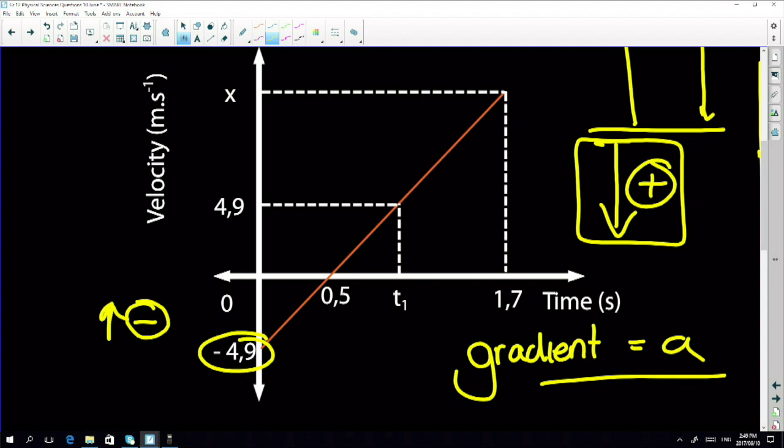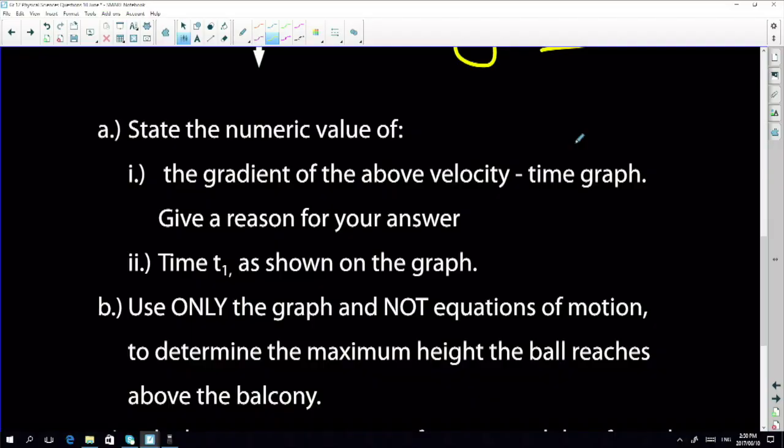It's free fall motion, that means it's only falling under the force of gravity. What do we know about the value of acceleration due to gravity? It's 9.8 meters per second squared. Give a reason for your answer: well, it's in free fall. If it's in free fall, it only accelerates at the force of gravity.